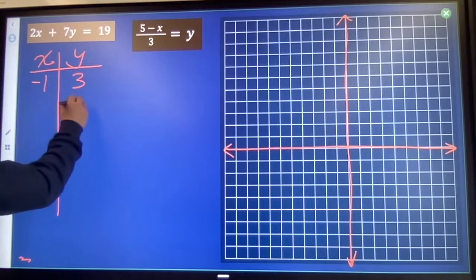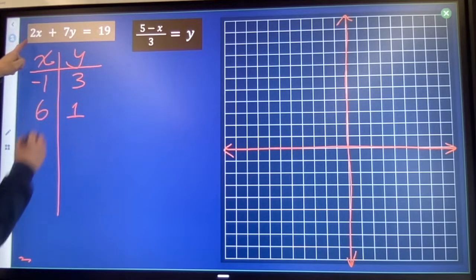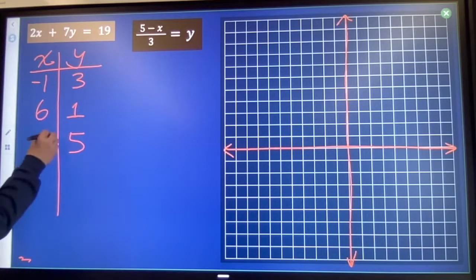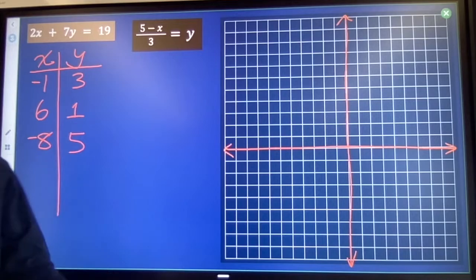I know that 1 times 7 makes 7, and I need to add 12 more to get 19, so I'll need 6 twos. I know that 5 times 7 is 35, and I need to subtract 16 to get down to 19, so I'll need negative 8 twos. That's me running numbers in my head.